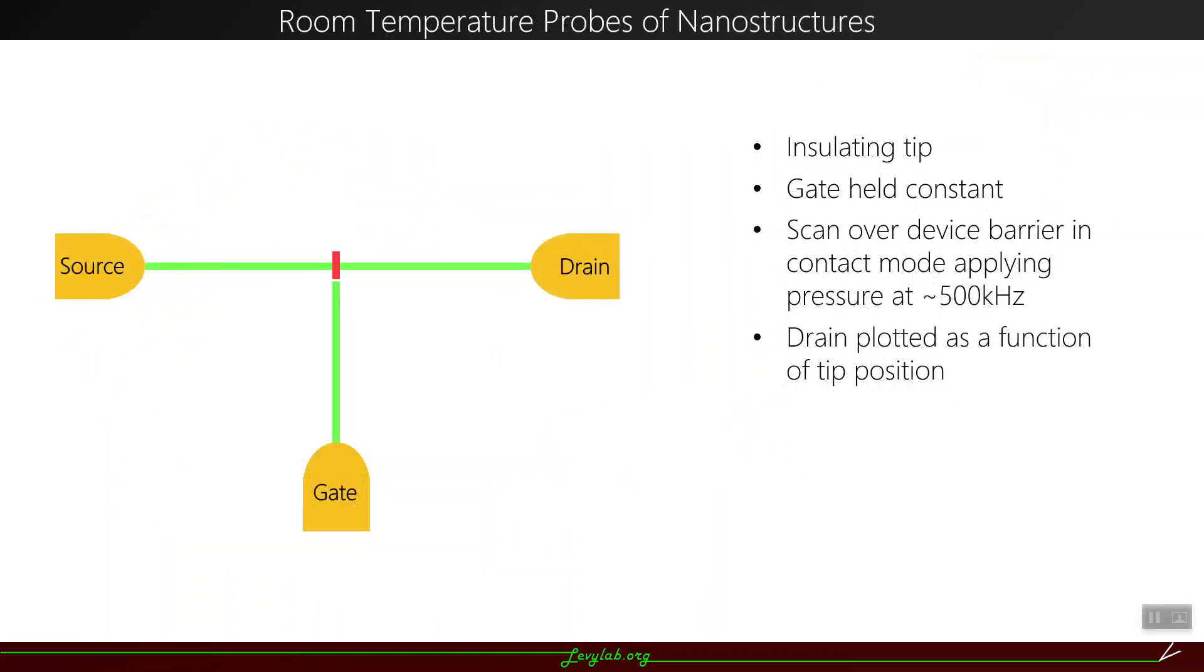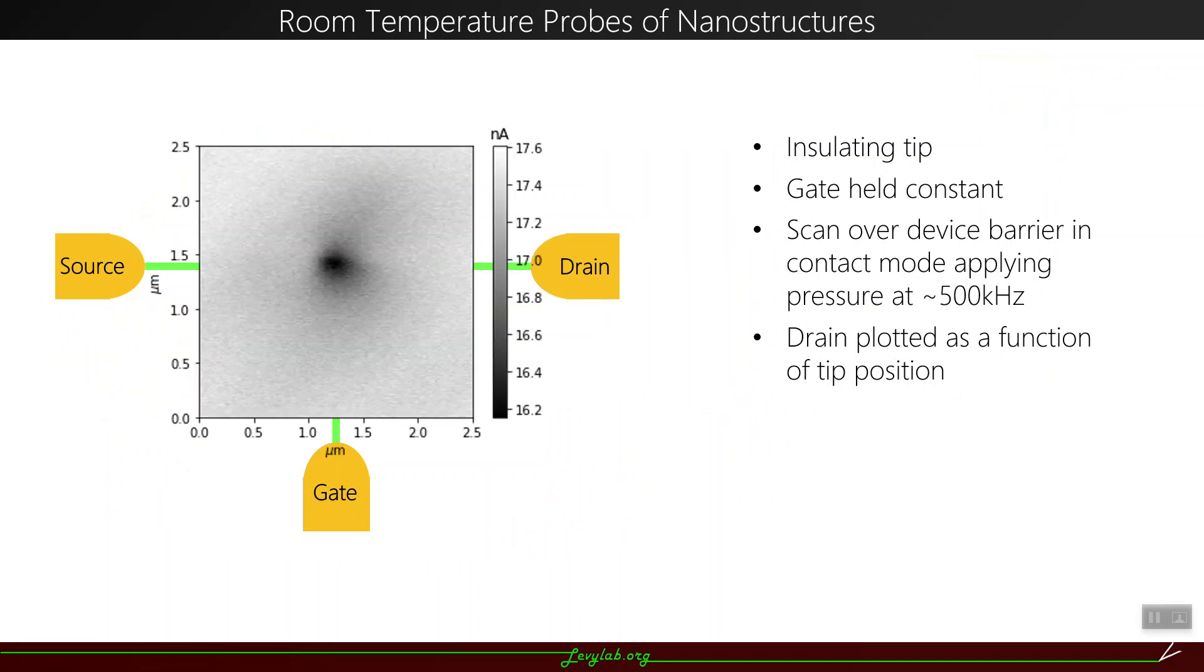Furthermore, we also did this once again with a stiffer tip that allowed us to apply pressure at a higher frequency, and we also created a much smaller device. You can see here that the drop in drain current happens almost exactly over the barrier junction that we created here. The device geometry over the results shows that it's pretty well localized.